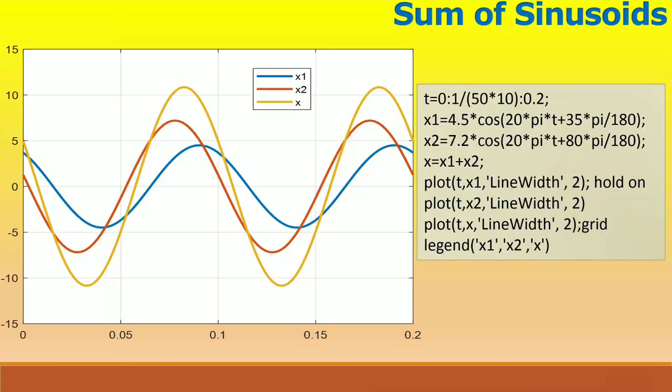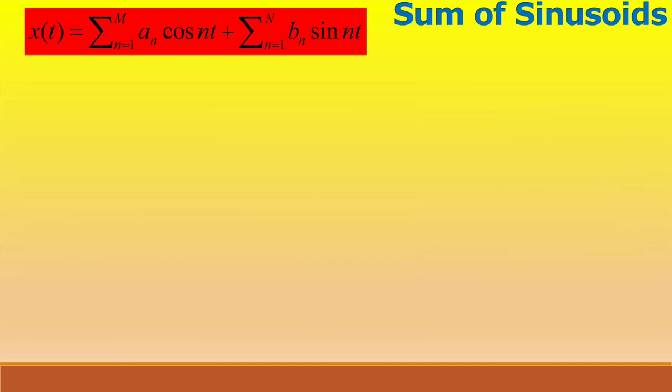Here we consider plotting sinusoids individually as well as their sum. The practice here is useful for Fourier series and Fourier transform which are the workhorse of signal processing analysis. Firstly we create 2 sinusoids x₁ and x₂ of the same 10 hertz frequency, these have amplitudes of 4.5 and 7.2, while the phase shifts are 35 and 85 respectively. The blue is x₁, red is x₂ and the sum is in light gray color.